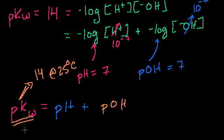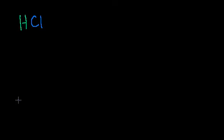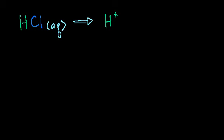With that out of the way, let's think about what happens if we throw some acid in — say, some hydrochloric acid in aqueous solution. We know it dissociates completely, so we're left with the hydrogen ion (which attaches to another water molecule and becomes hydronium) plus the chlorine anion.